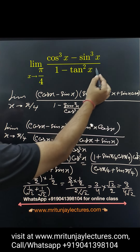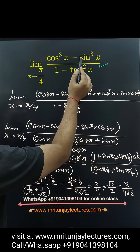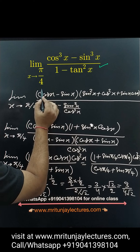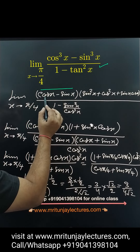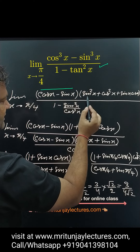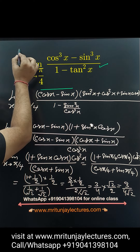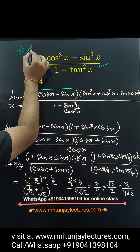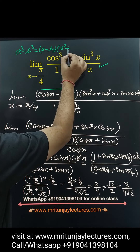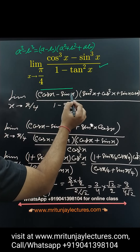Question of the day: determine the value of limit x tends to π/4 of cos³x minus sin³x divided by 1 minus sin²x. Using the formula, cos x minus sin x into cos²x plus sin²x plus sin x cos x — basically the a cube minus b cube formula, that is a minus b into a square plus b square plus ab. So that formula is used here.